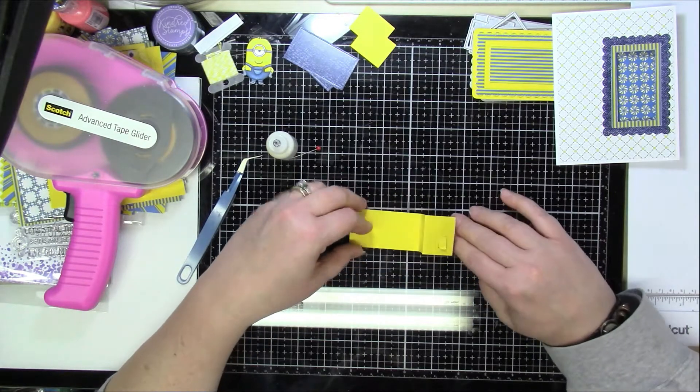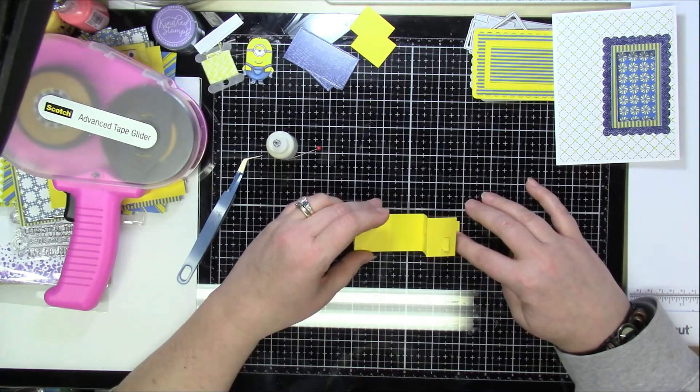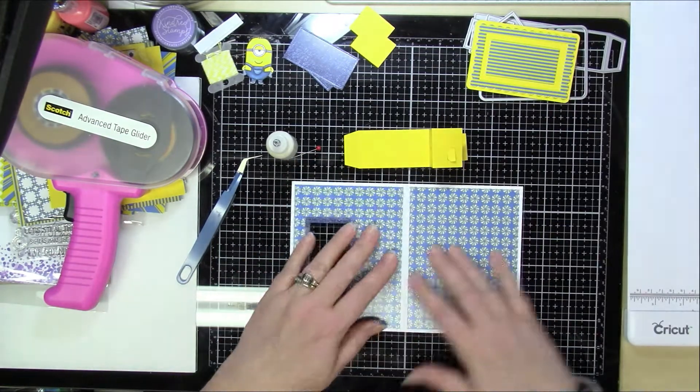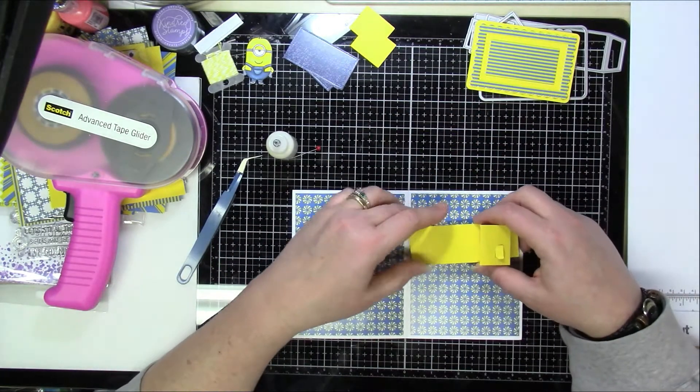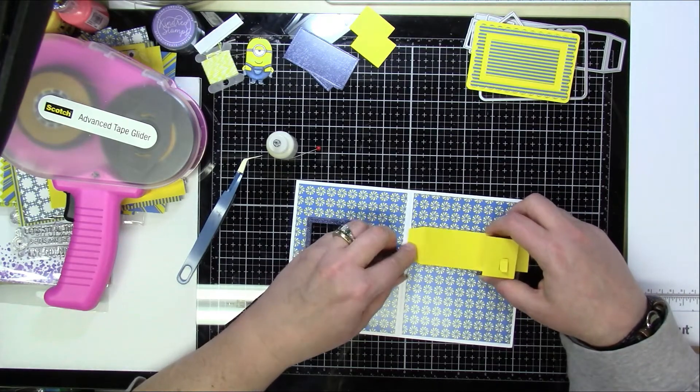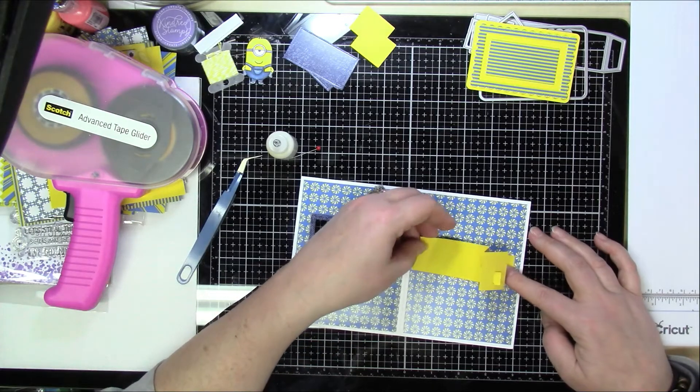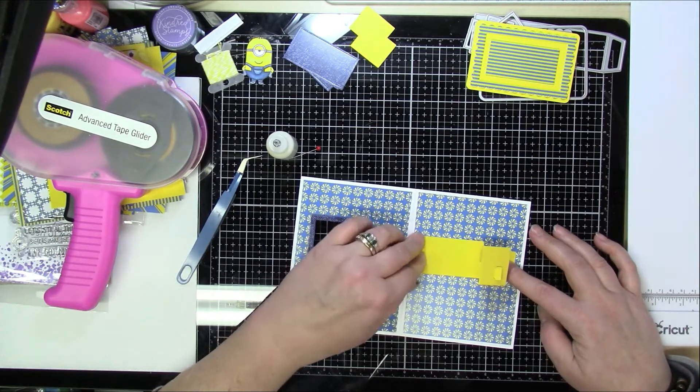Now I do adhere mine down. I want to make sure that they're going to stay and they don't slip out. I also put, especially on the one that's out, I put down some glue onto it just to kind of make sure that it's going to stay there and stay in the right area.